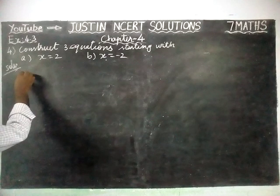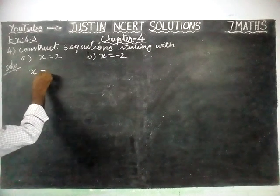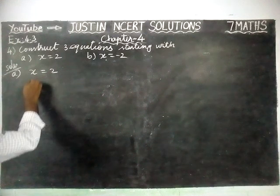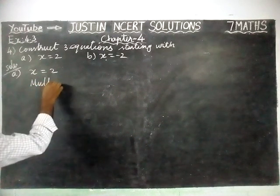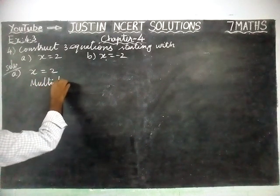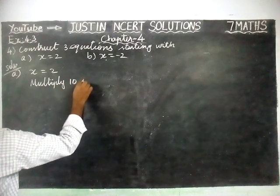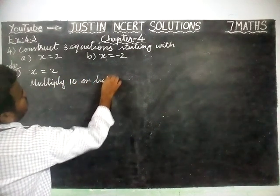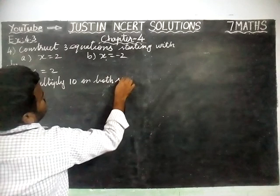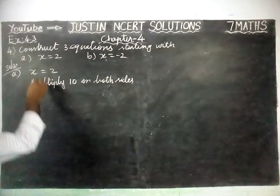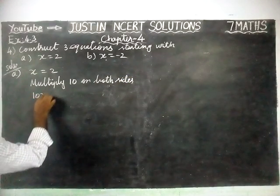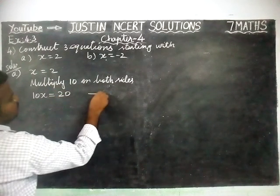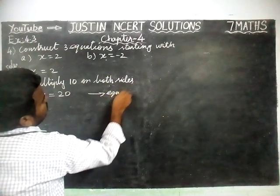Part A: we are going to solve x is equal to 2. We are going to multiply 10 on both sides. So, 10 into x equal to 10x, equal to 2 into 10, equal to 20. And this is equation 1.